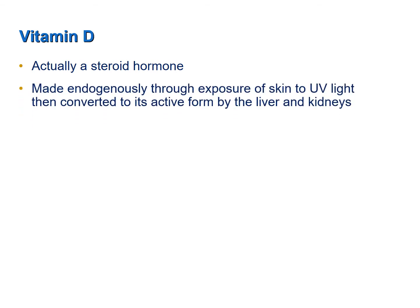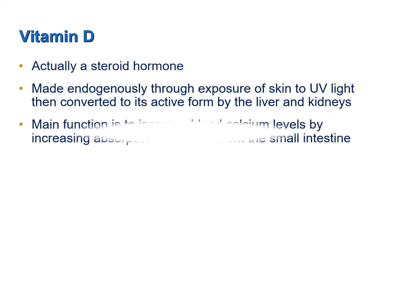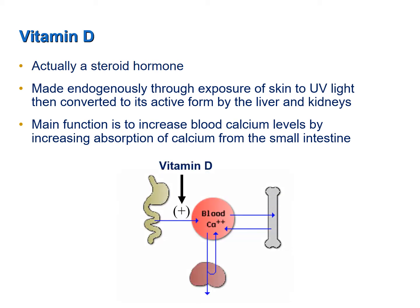Vitamin D is made endogenously when UV light from the sun bombards your skin. Your skin cells make vitamin D, and that vitamin D is then converted to an active form by a process that involves the liver and the kidneys. The main function of vitamin D is to increase blood levels of calcium, and it does this by increasing the absorption of calcium from the small intestine. So even though you may have sufficient amounts of calcium in your diet, to really absorb that calcium and bring it into your blood, you also have to make sure your body is making sufficient amounts of vitamin D.